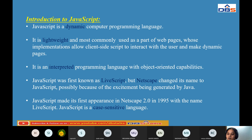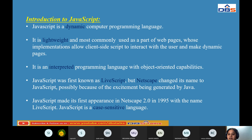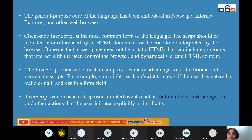JavaScript is a case-sensitive language. To summarize: it is a dynamic programming language, a lightweight programming language most commonly used as part of web pages implementing client-side scripts. It is an interpreted programming language with object-oriented capabilities. The first name was LiveScript, changed by Netscape to JavaScript. It first appeared in Netscape 2.0 in 1995. JavaScript is case-sensitive.